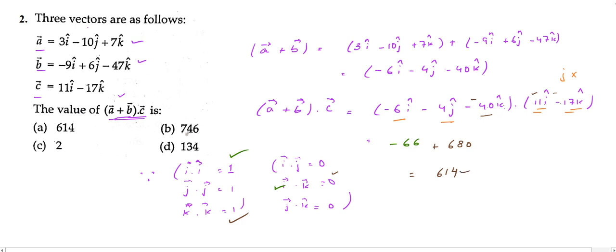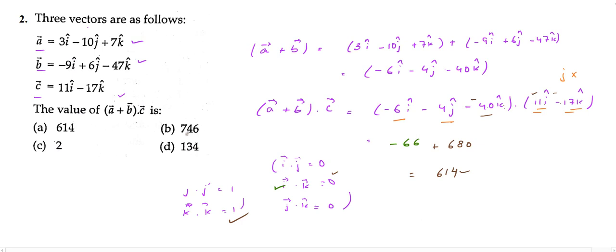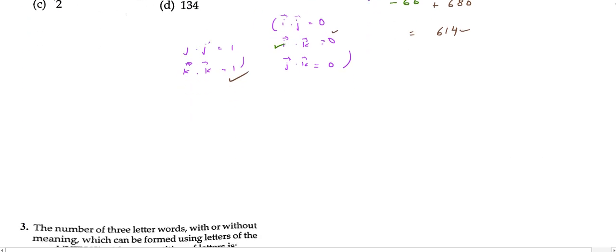So we are left with −66 + 680 = 614. Our correct answer is 614, which is option A. Now let us move on to our third question.